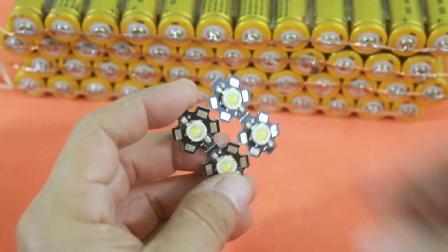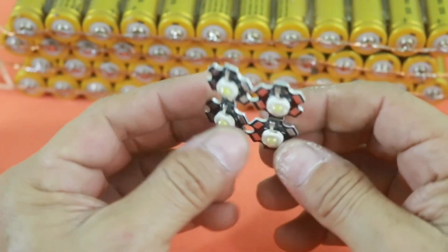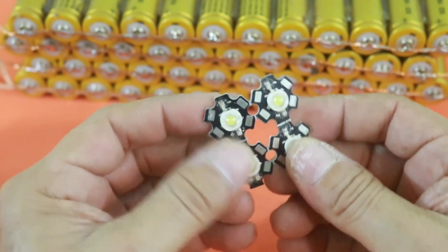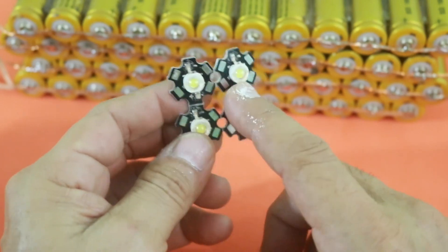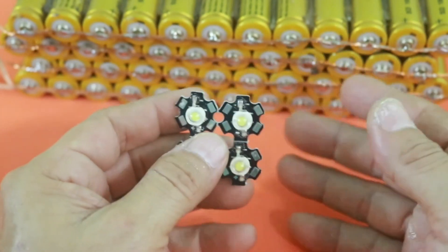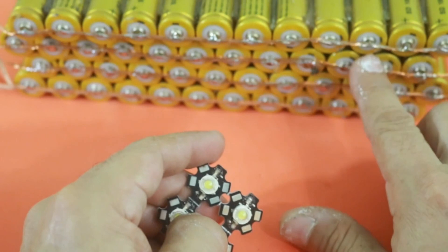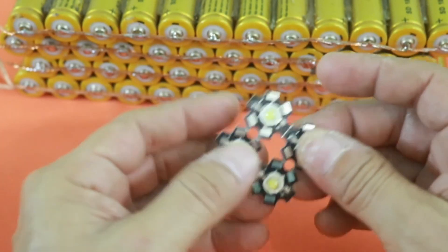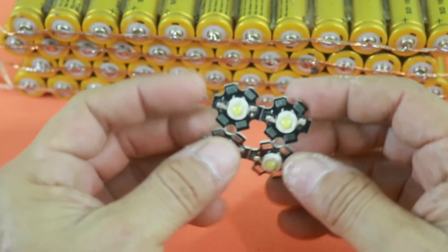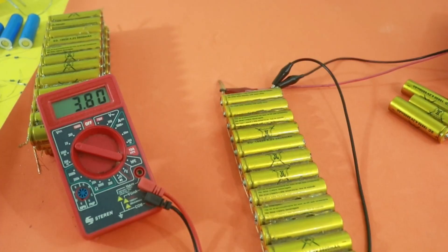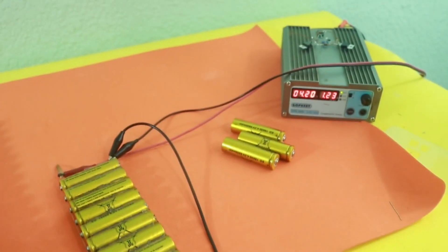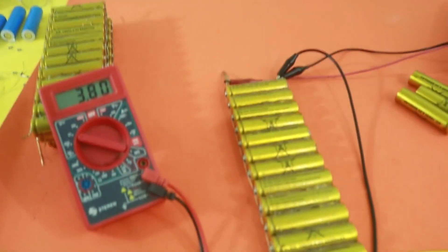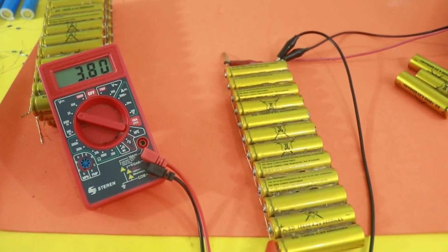The light will be provided by a couple of these LEDs. They are 3 watts each and they have a nominal voltage of 3.6 volts, so it is perfect for these cells to provide the voltage that these LEDs need. First, I will charge all the batteries using my power supply until they reach the voltage of 4.2 volts.